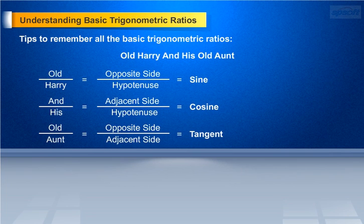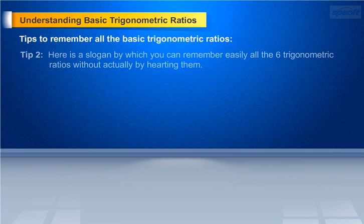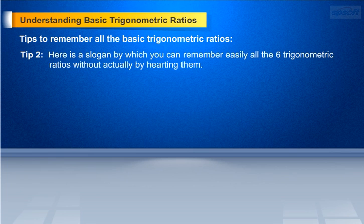Let us now see the second tip to remember the trigonometric ratios. Here is another slogan by which you can remember all six trigonometric ratios without memorizing them. Take the first word to remember sine, the second word to remember cos, and the last word to remember tangent. The slogan is: SOH, CAH, TOA.